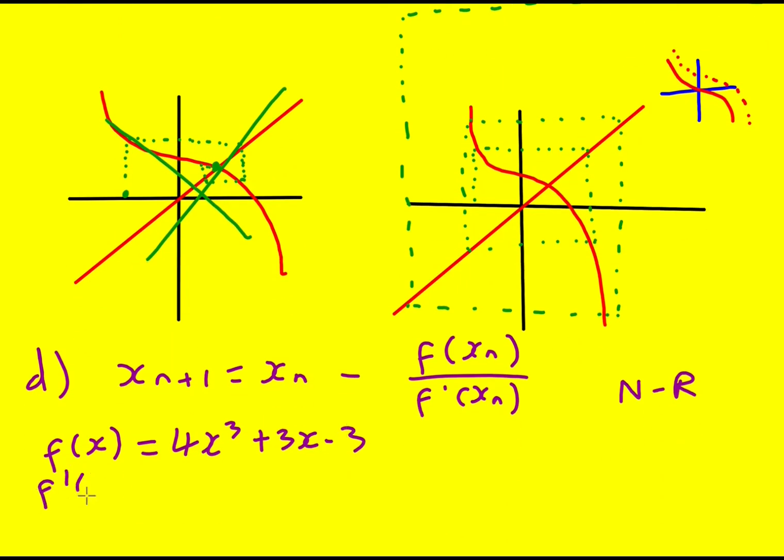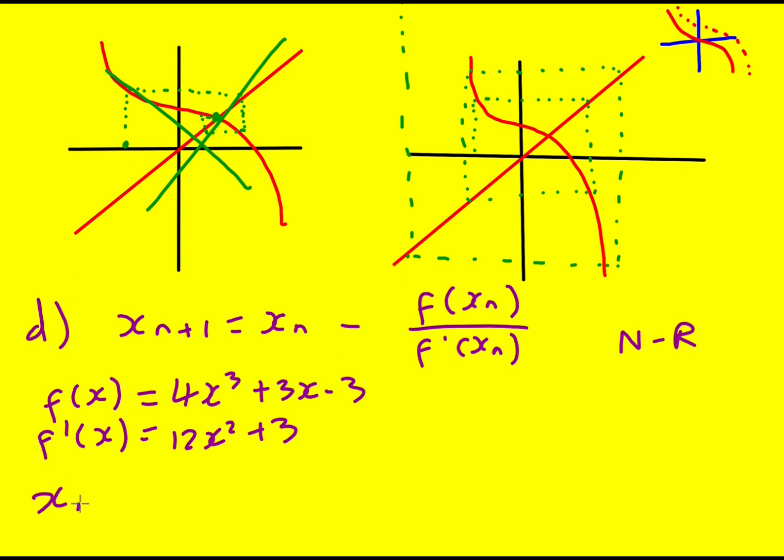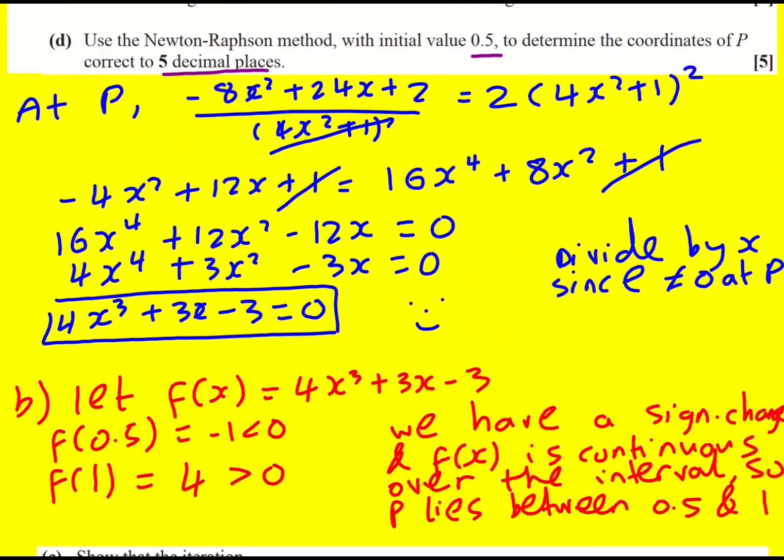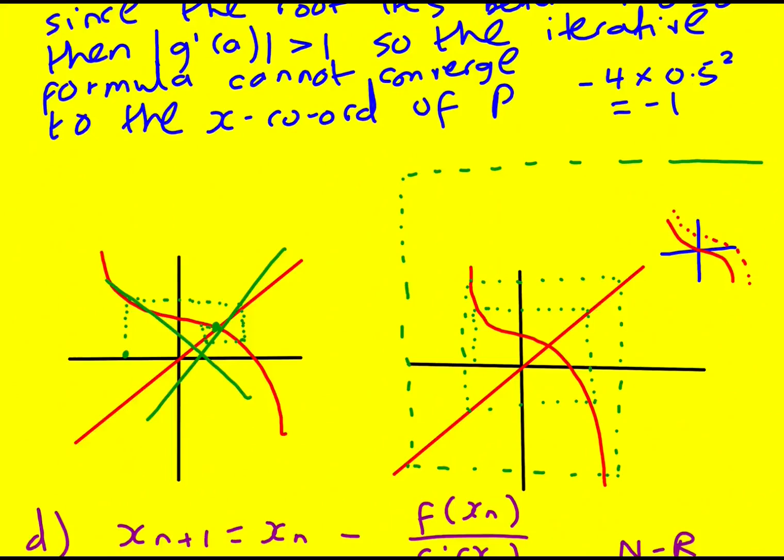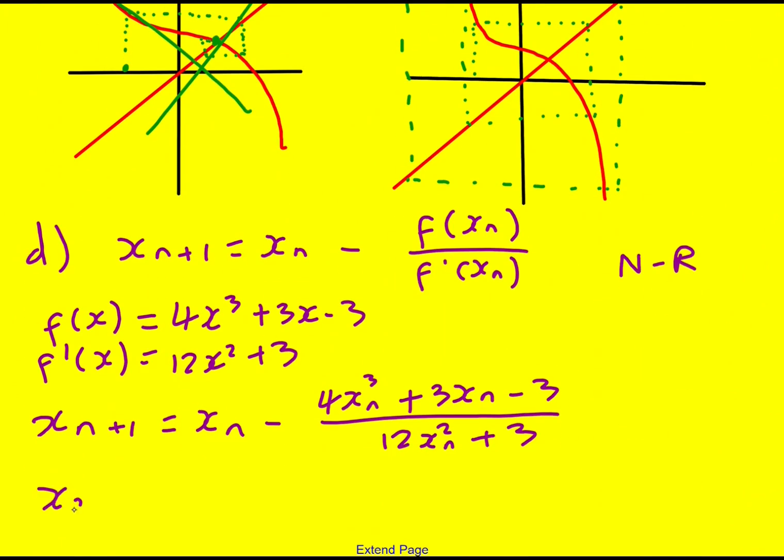Which means for us, f dash x is going to be 12x squared plus 3. And therefore, in our case, the Newton-Raphson formula: just put your f of x in, but replace all your x's by xn's. And the same with f dash x. We were told to put an initial value of 0.5, and it was five decimal places it wanted.